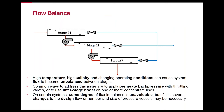Extreme temperature, high salinity, and variable production can cause flux imbalance, which results in high flux in the lead element or elements in a stage. This can lead to increased fouling tendency. In a multi-stage system, flux can be balanced using permeate throttling and interstage boost. At very high temperatures, high flux in the lead element can sometimes be unavoidable, but we can use these strategies as well as the proper ratio of pressure vessels between stages to mitigate the worst effects of flow imbalance.